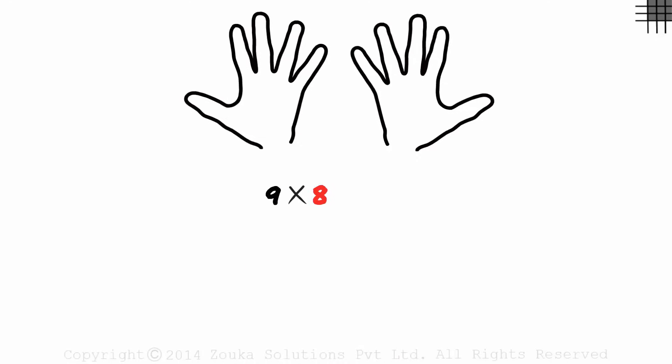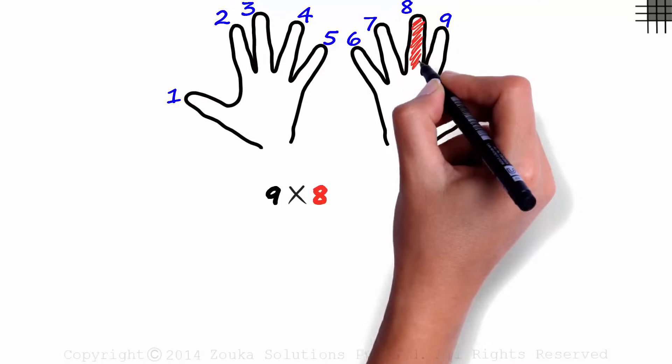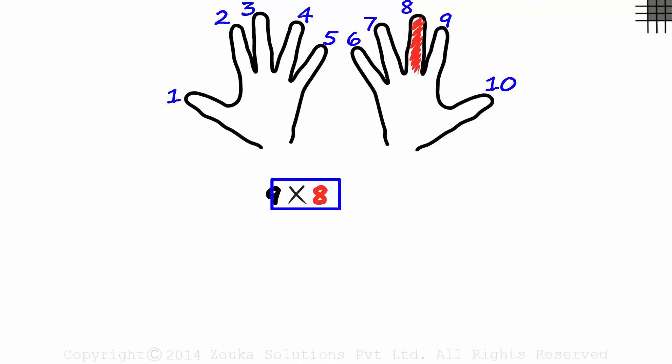What's 9 multiplied by 8? Let's number the fingers in a clockwise direction, 1 to 5 and 6 to 10. This is the 8th finger.